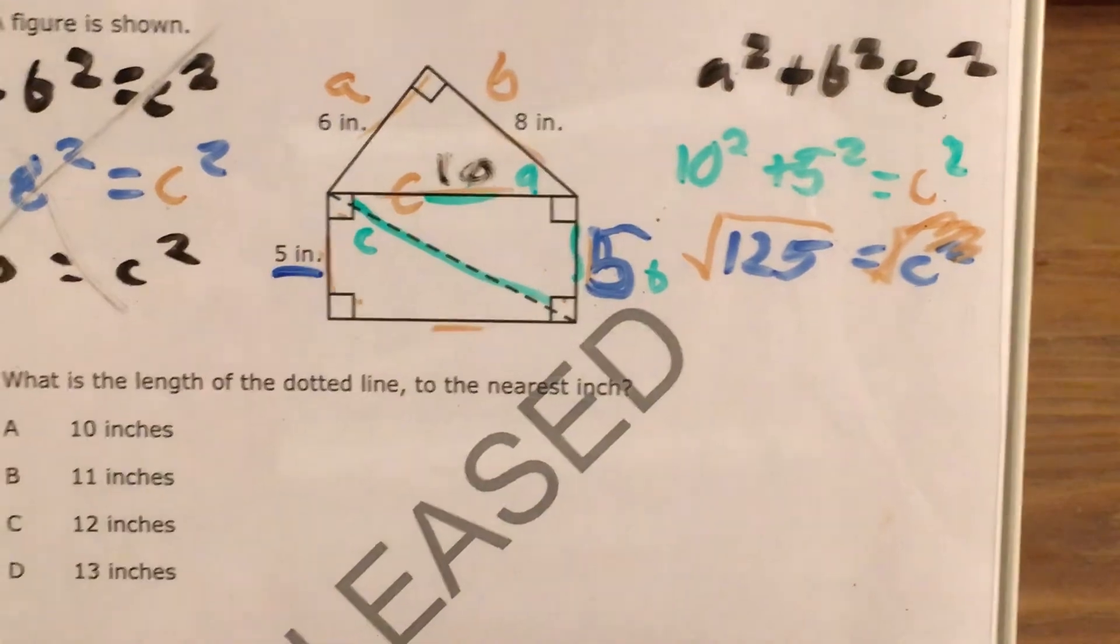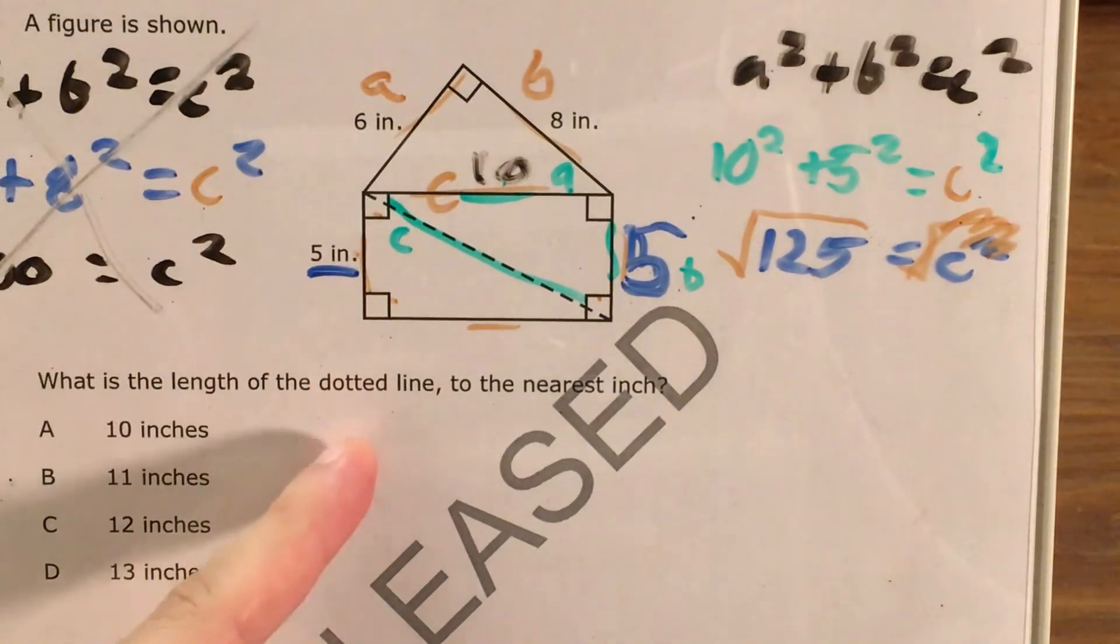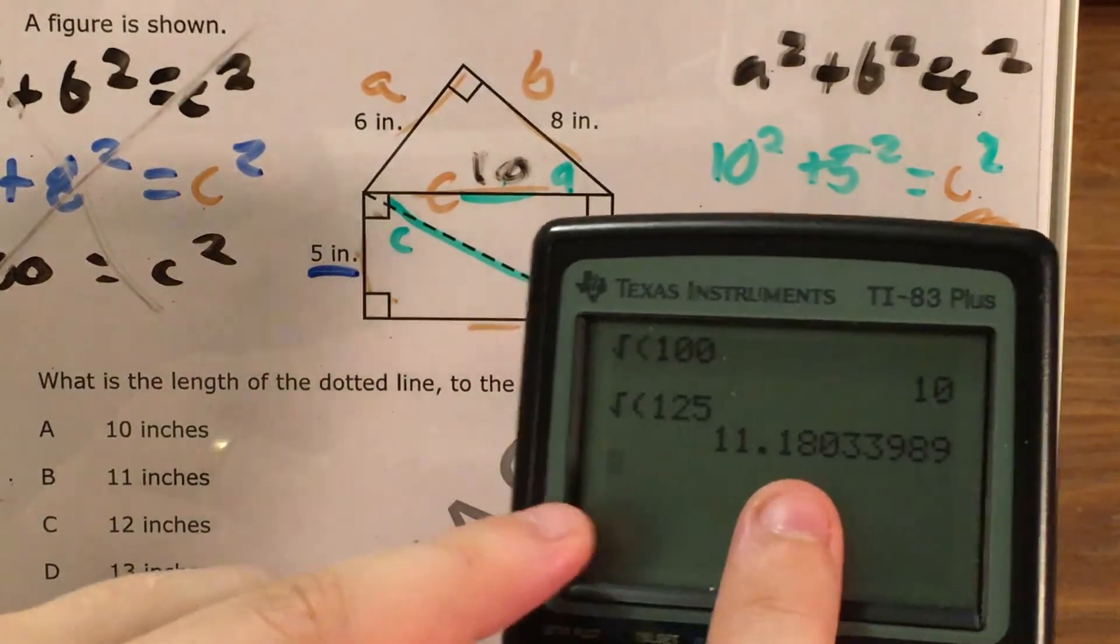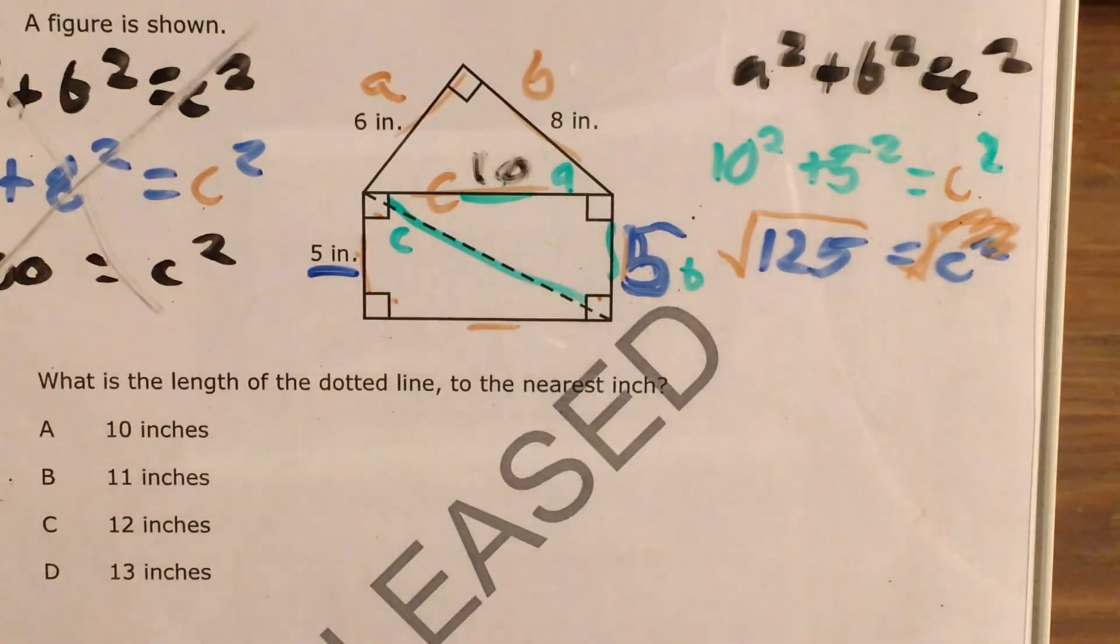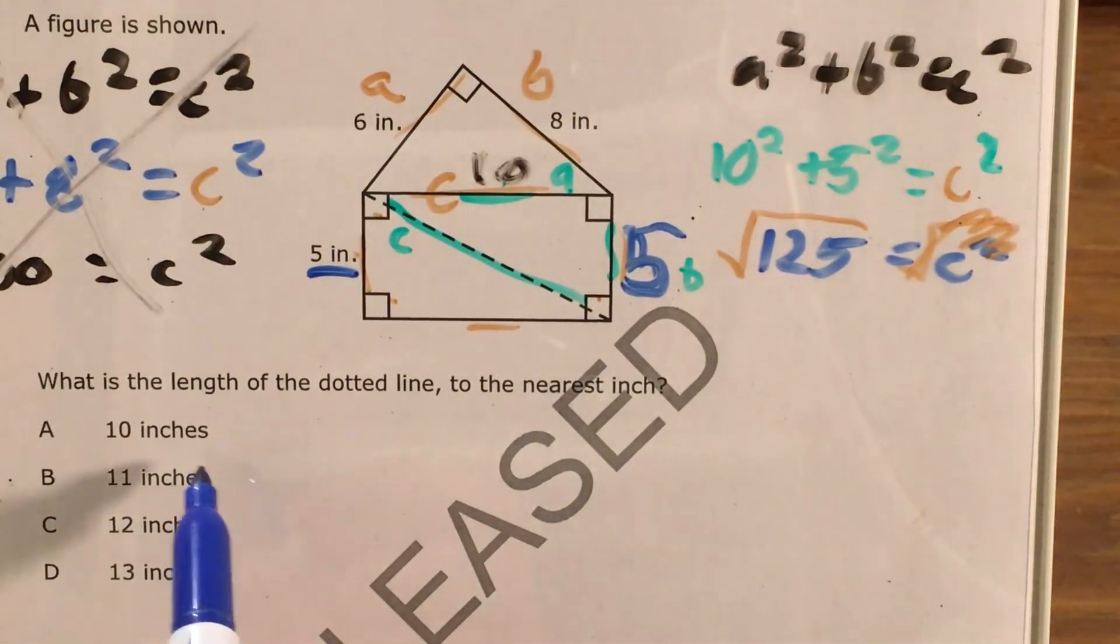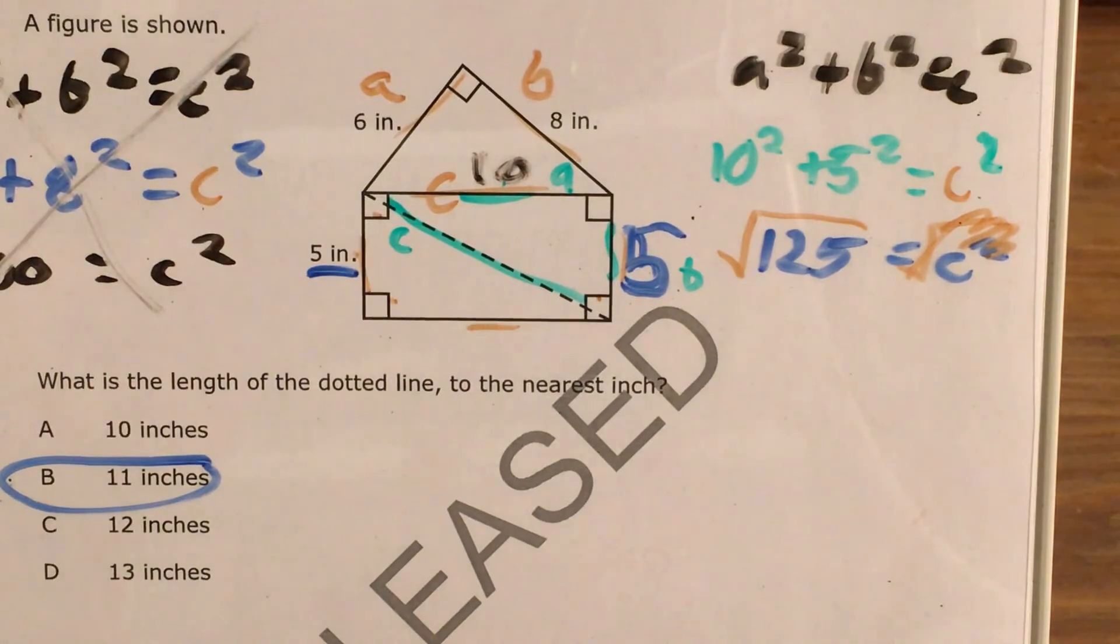So I need to look back at my answer choices. It asks, what is the length of this dotted line to the nearest inch? 11.18 or 11 and 18 hundredths or something like that? That's closest to 11 inches. So my answer is B.